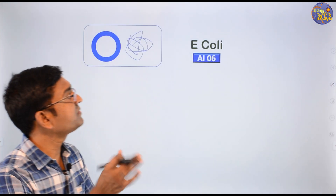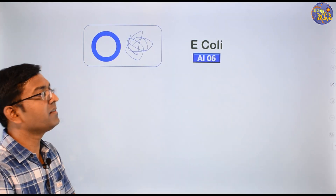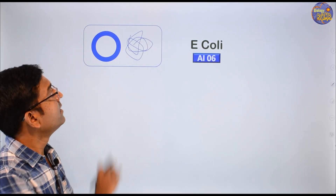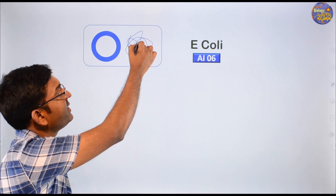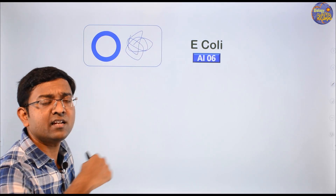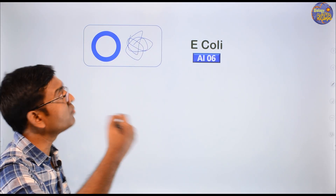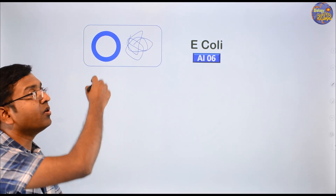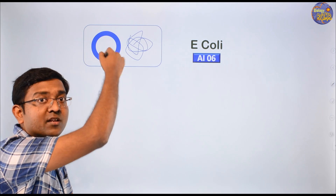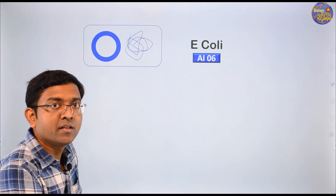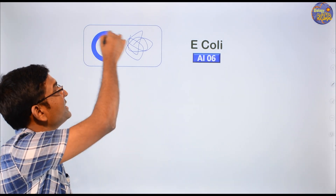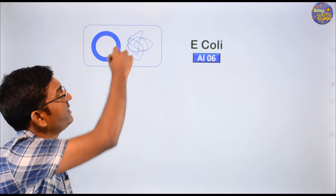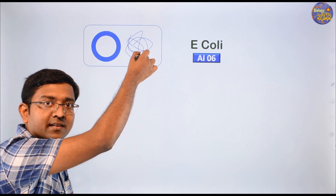In E. coli bacteria, there is chromosomal DNA and then there is extra-chromosomal DNA called a plasmid — that is circular DNA. Now why is it called plasmid DNA?